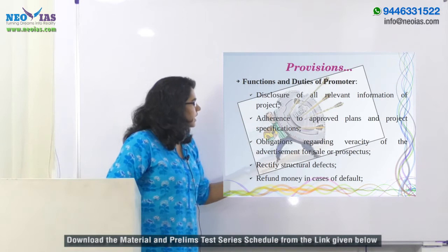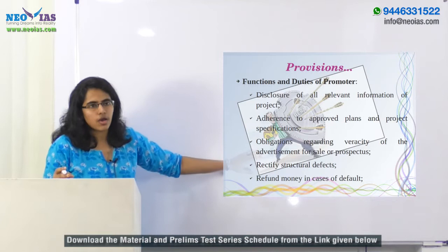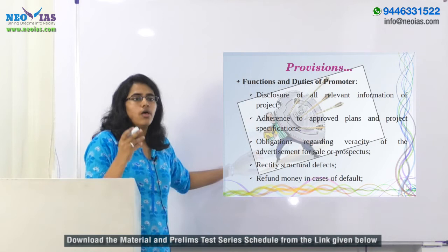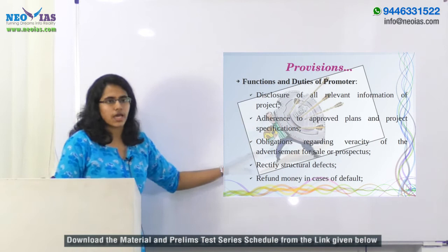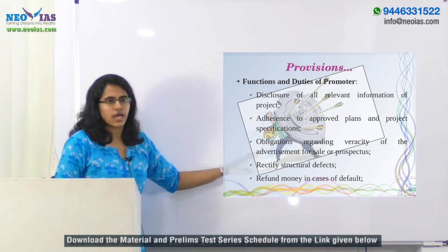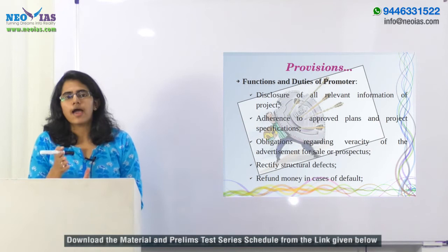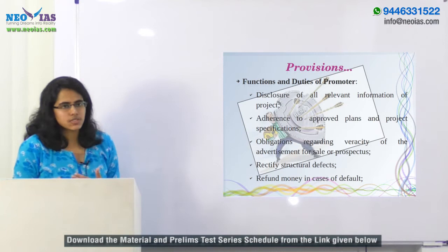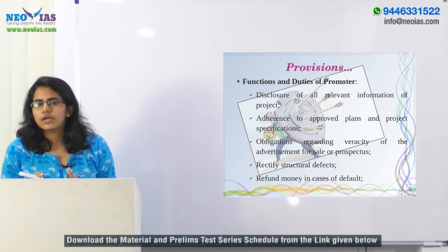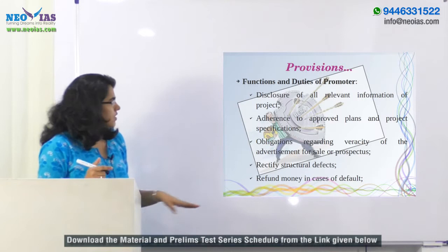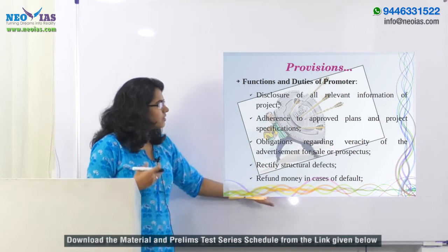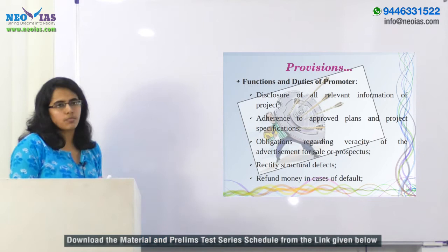There is also an obligation regarding the veracity of advertisements for sale and prospectuses. Promoters can only put out advertisements after registering the particular project with the regulatory authority. The act also puts an obligation on the promoter to rectify structural defects. If any structural defect is visible within five years after handing over possession to the allottee or buyer, the promoter will have to rectify it within thirty days without charging any cost. They will also have to refund money in cases of default.